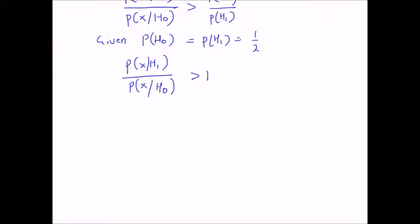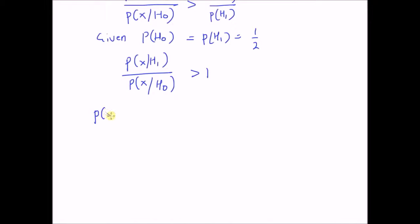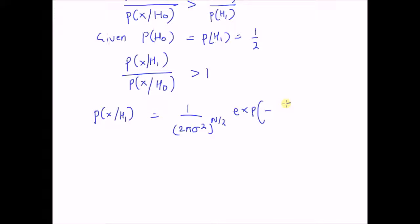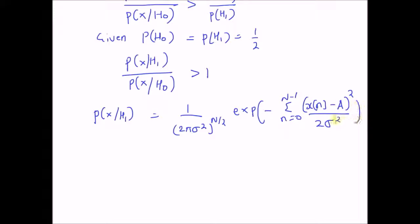Now we construct the likelihood probabilities. The probability of x given H1 is equal to (1/(2πσ²))^(N/2), the normalizing constant, multiplied by exponential of minus the summation from n=0 to N−1 of (x(n) − A)² divided by 2σ². This is the model for the observations under alternate hypothesis H1.